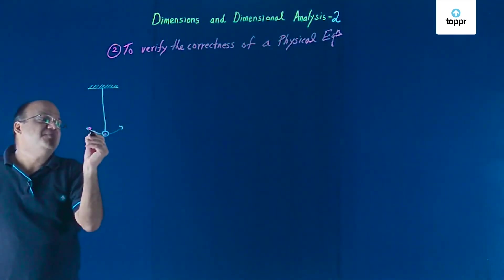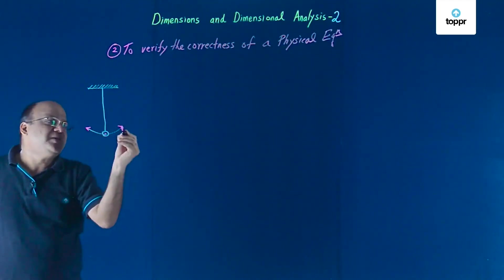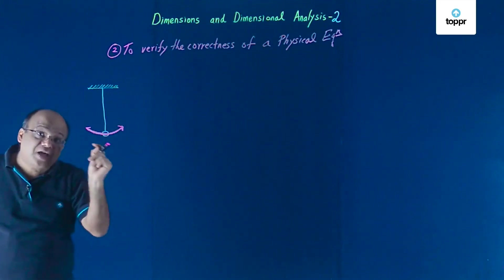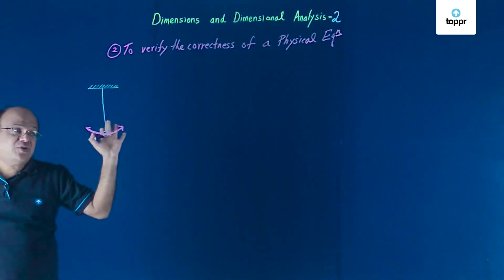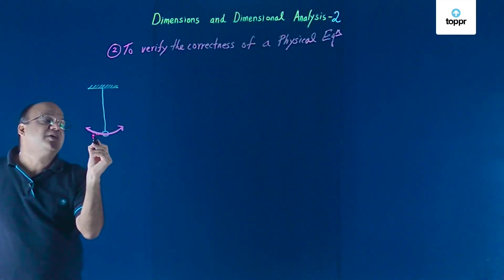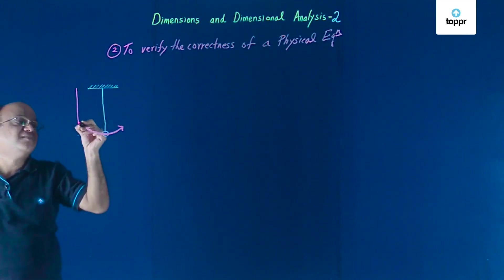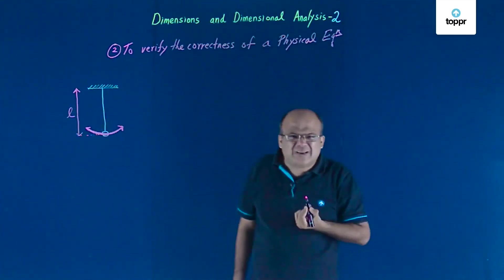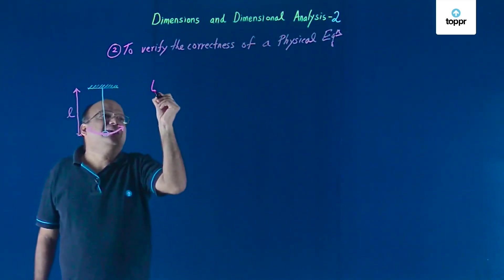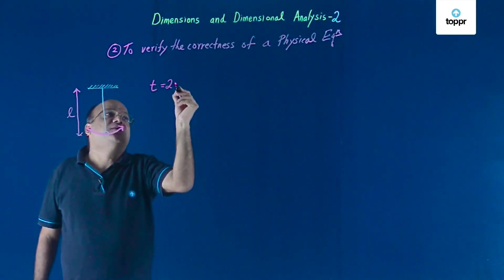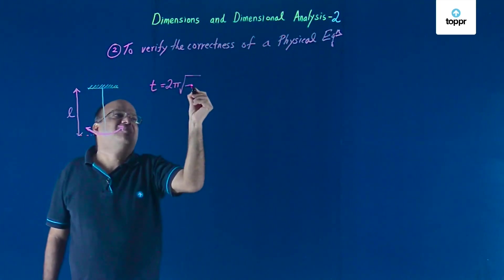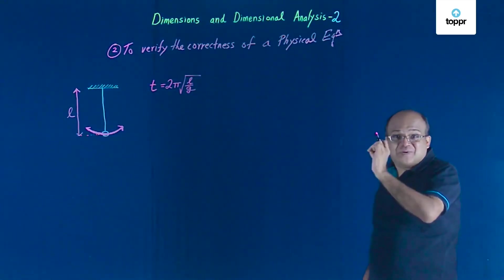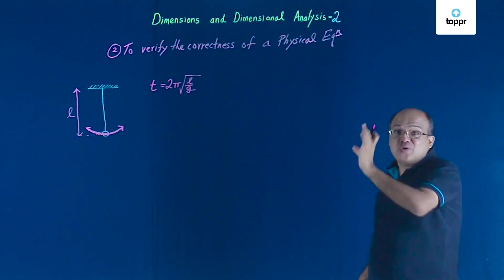In this simple pendulum we have something called the time period — the time to complete one full oscillation. L is the length of the string, and G is the acceleration due to gravity. The time period T is equal to 2π times the square root of L by G. This is a very famous and important formula that gives us the time period of a simple pendulum.